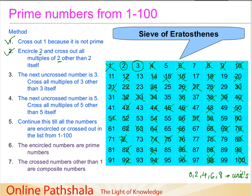75 — yes, it is a multiple of 3, so we cross it out. 77 is not a multiple of 3. 81 — is it a multiple of 3? Yes, it is, so we cross it out.